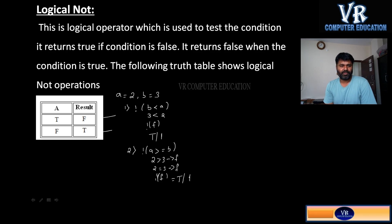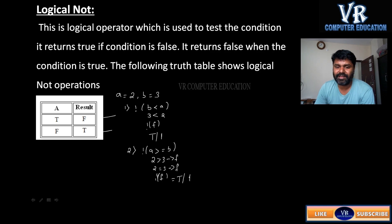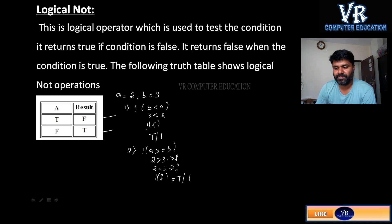I hope you understood logical NOT also. So these are three logical operators: AND, OR, and NOT. AND means both conditions should satisfy. OR means any one condition should satisfy. NOT means it negates the expression — if condition is true, result is false; if condition is false, result is true.